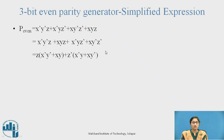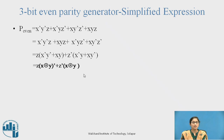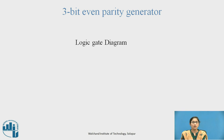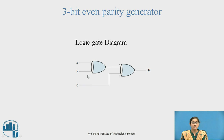This Boolean expression is rearranged. After that, Z and Z̄ are taken common, and we get an expression involving the XOR operation. Finally, we get the simplified expression: P_even = X XOR Y XOR Z for the 3-bit Even Parity Generator. From that simplified expression, we can draw the logic gate diagram using 2-input XOR gates.